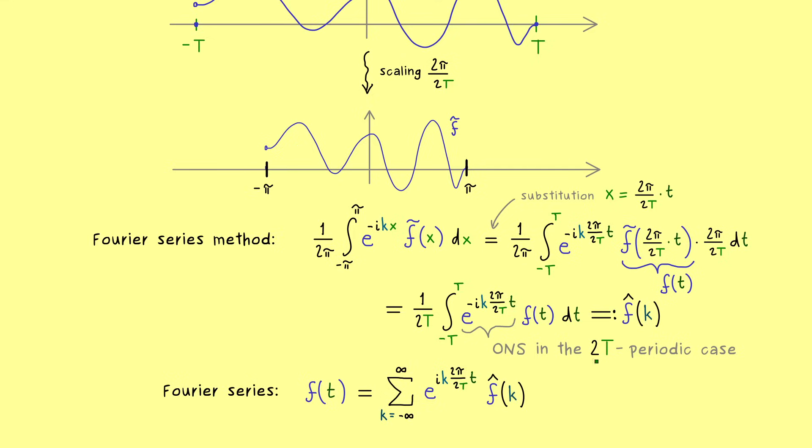So in the 2π periodic case we know it is given by this formula, and now by the substitution we have this formula for the general case. So in that sense we don't have anything new, just instead of 2π we talk about 2T.